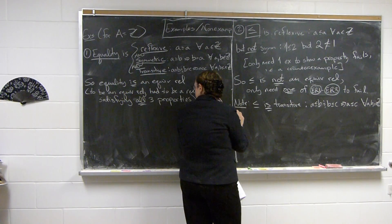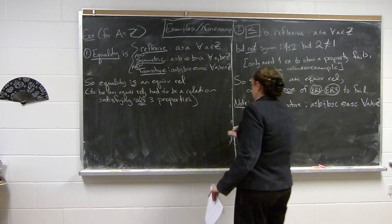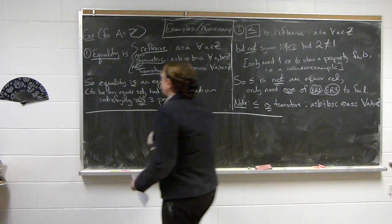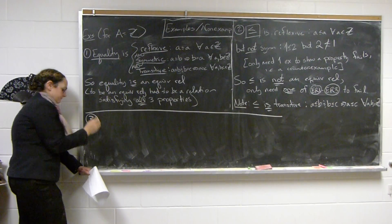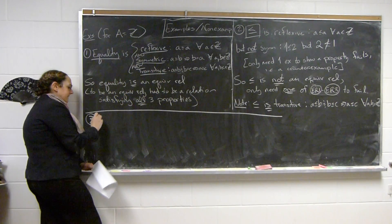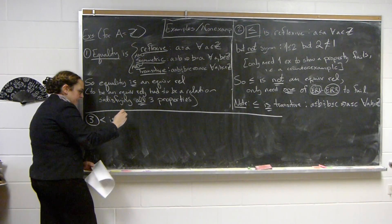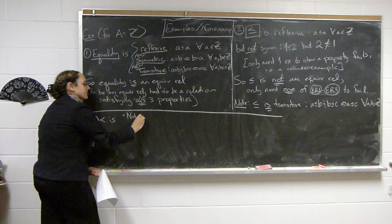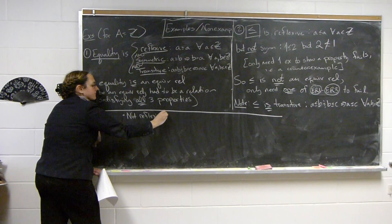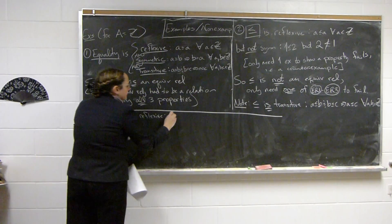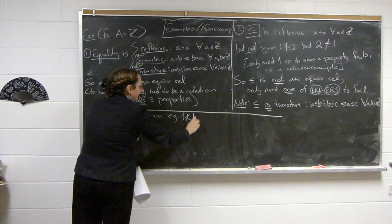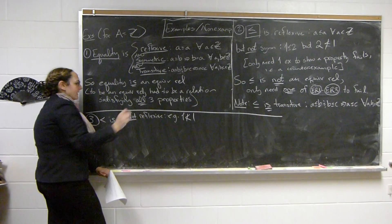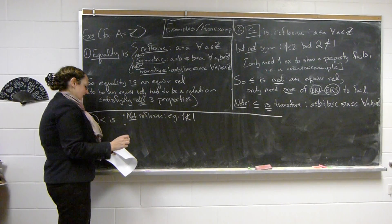And then finally, so my third example. Less than is, so we'll go through. So, it's not reflexive. The example is one is not less than one. But actually, it's never reflexive. You wouldn't need that it's never reflexive, but in this case, for no element do we have that it is related to itself.